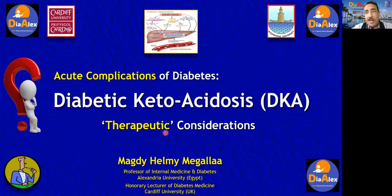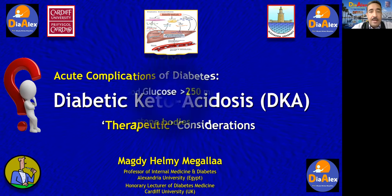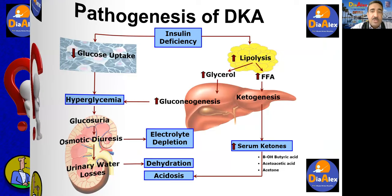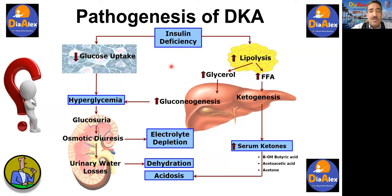Diabetic Ketoacidosis: Therapeutic Considerations — how to treat and manage a case with DKA. In DKA we have a triad of hyperglycemia, ketosis, and metabolic acidosis. The pathogenesis of DKA starts with insulin deficiency and ends up with hyperglycemia, ketosis, and metabolic acidosis with wide anion gap.